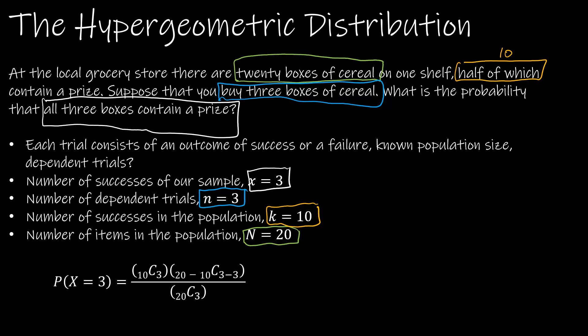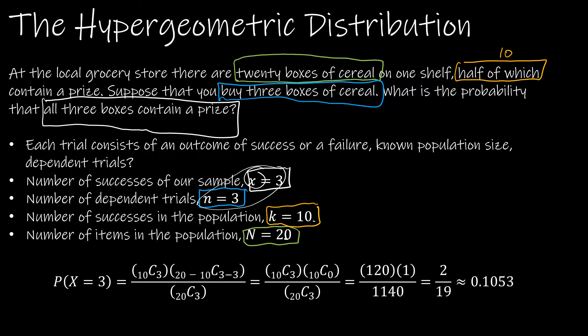Now, how are we going to do this? Using the hypergeometric formula, the probability that X equals three is: 10 choose 3, times (20 minus 10) choose (3 minus 3), all divided by 20 choose 3. That gives us 10 choose 3, times 10 choose 0, divided by 20 choose 3. Using a calculator, I get 120 over 1140, which is 2 out of 19, or about 0.1053. So the probability of getting a prize in all three boxes is about 10.53%.